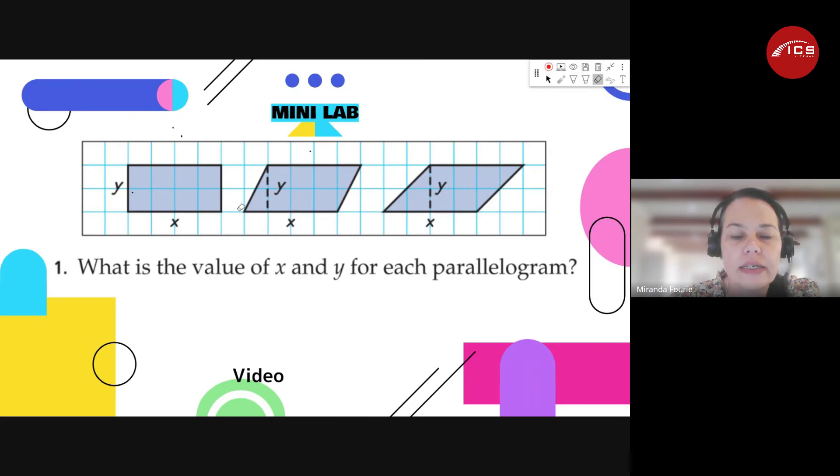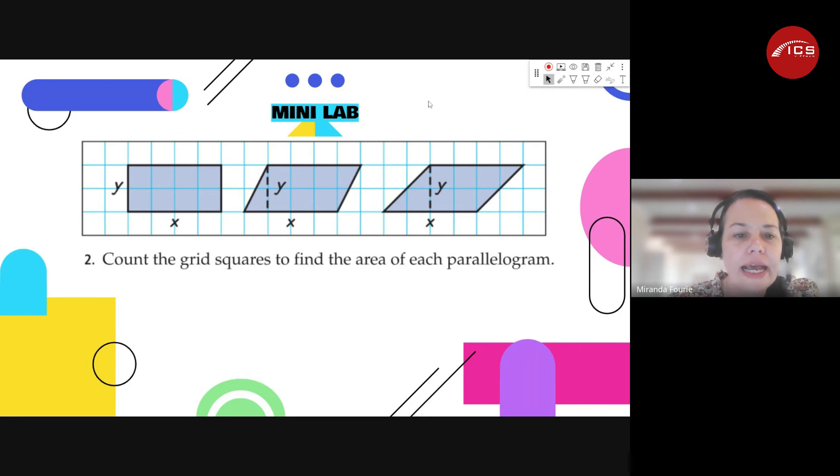We can't count the slanted line. We can't count the diagonal. So, X is the length, Y is the height. And then we count it - this is another thing. If we want to know the area, we can count the blocks inside.